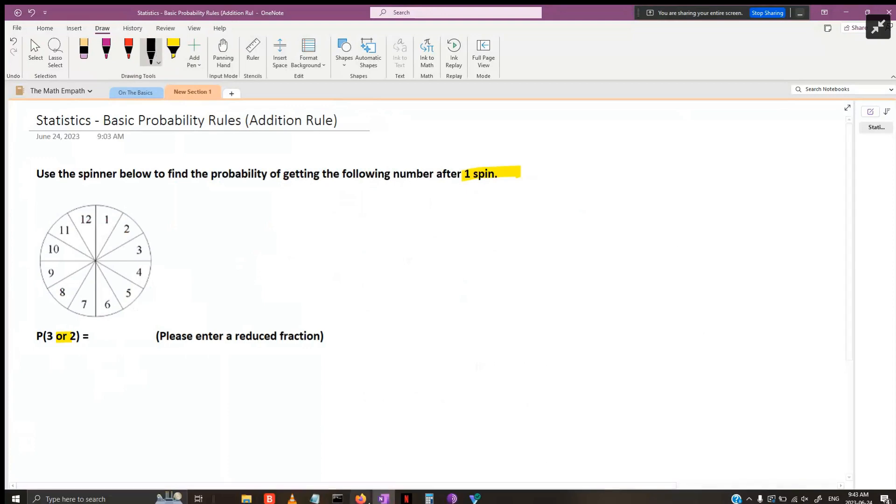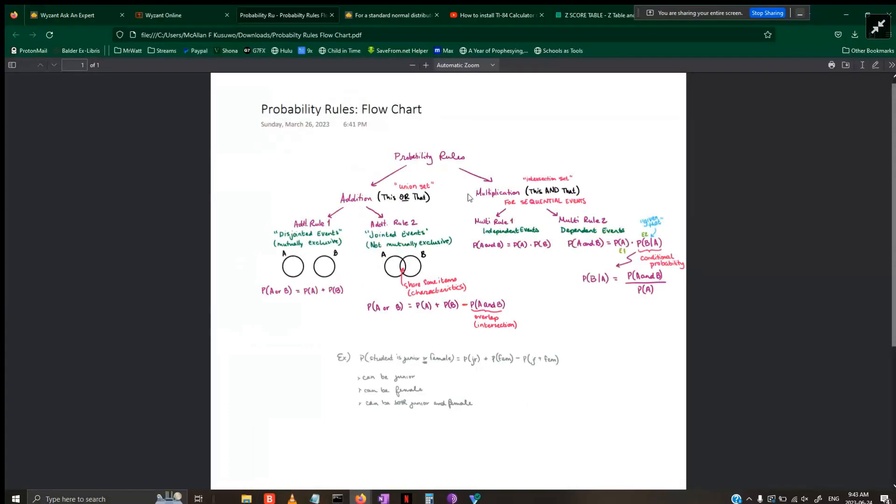I want to quickly showcase a flow chart I created a while back as a way to help you decide which rule to go with. Please take a moment to pause here, screenshot, or write it down so that you have this for future use in your notes, homework, and eventually quizzes and exams.